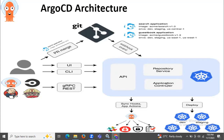The API server is a REST server which exposes the API consumed by the web UI and CLI. It handles application management like create, update, and delete, as well as application operations like sync, rollback, repository and cluster management, and API authentication.